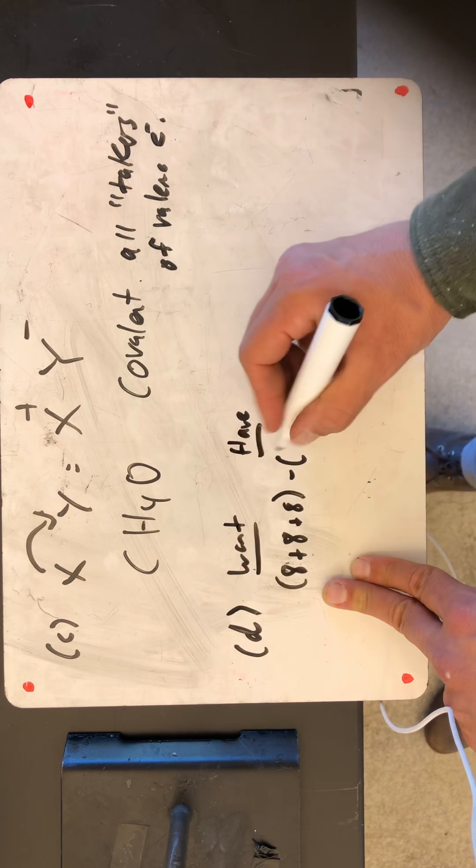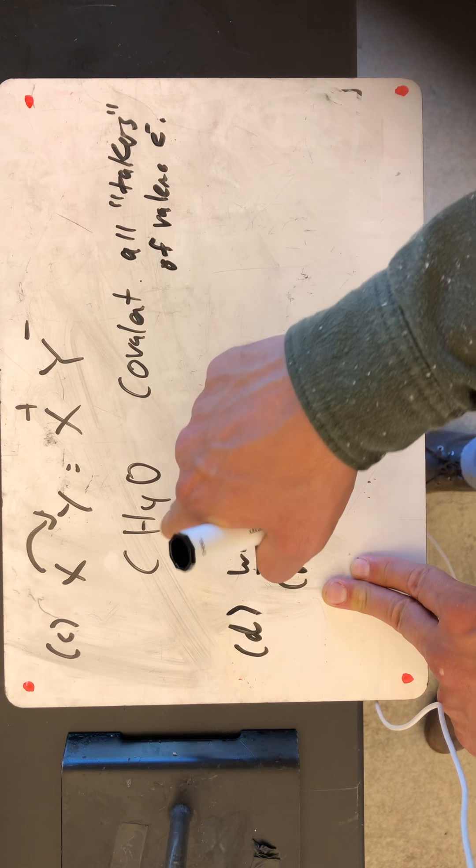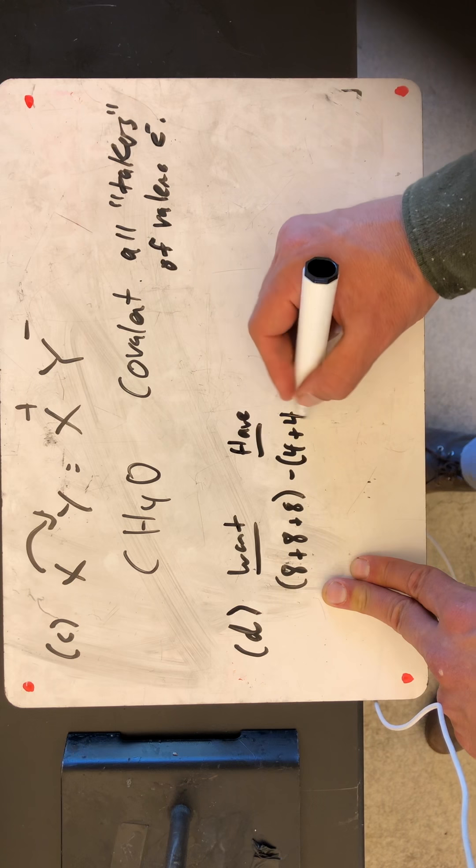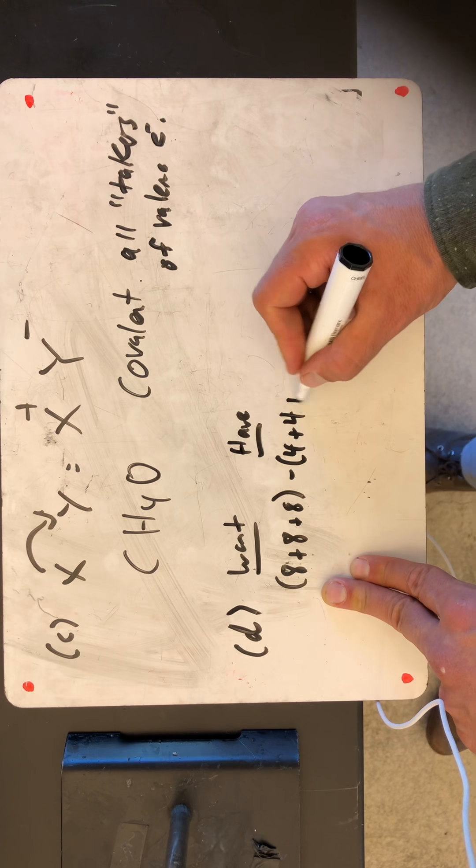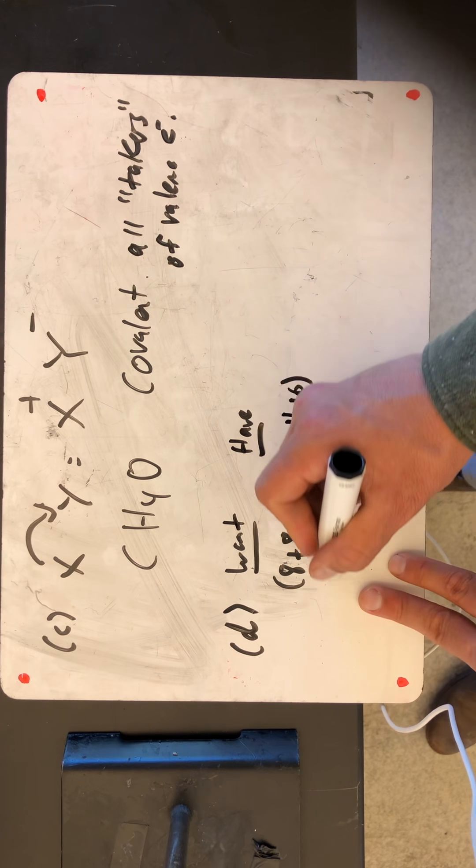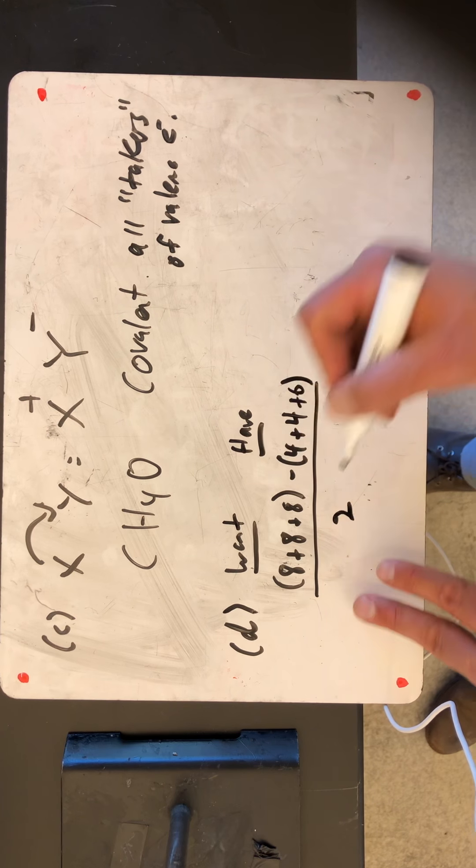Okay, well, carbon has 4. Oxygen has 1. 4 times 1 is 4. I mean, hydrogen. And oxygen has 6. And with it, we're gonna divide this whole thing by 2.